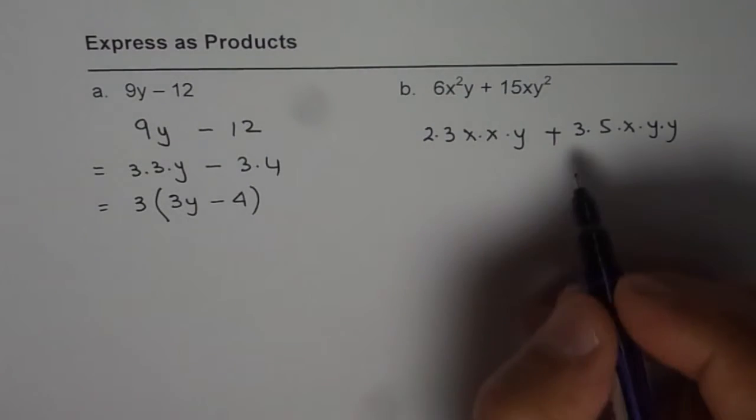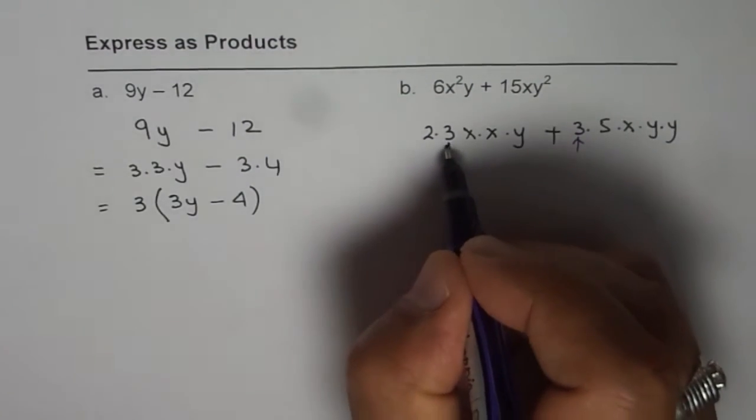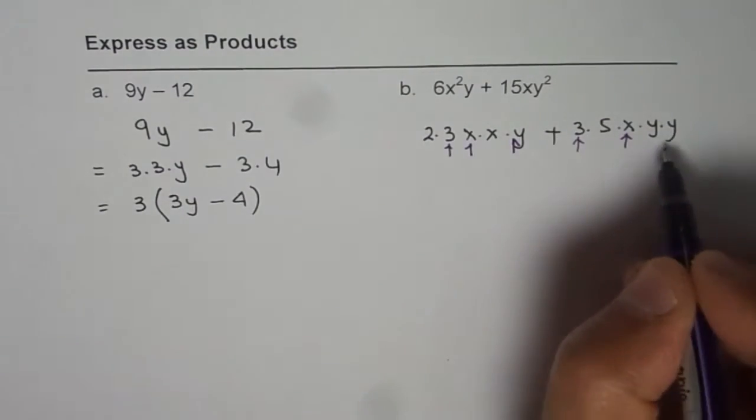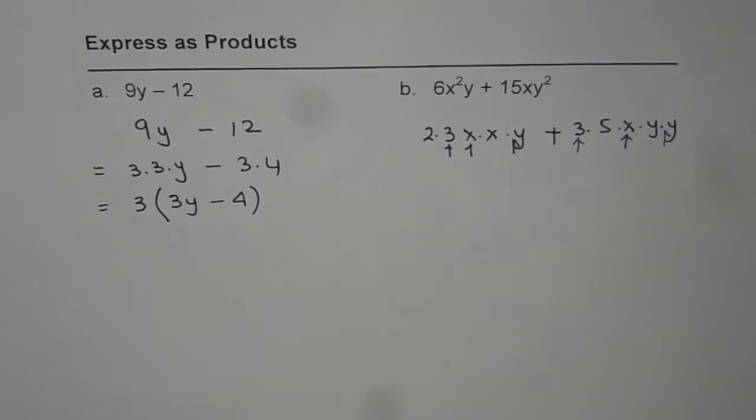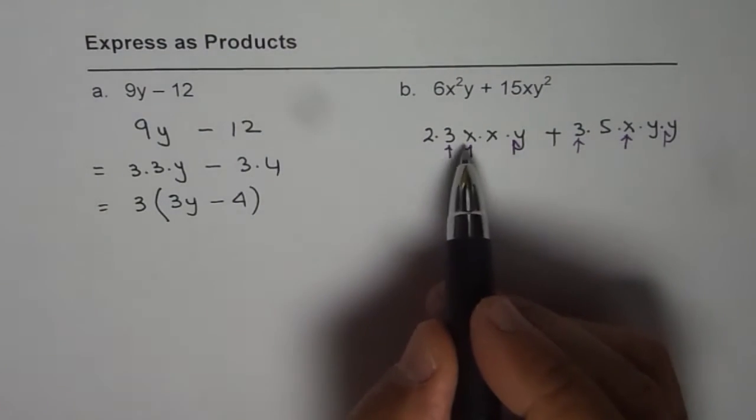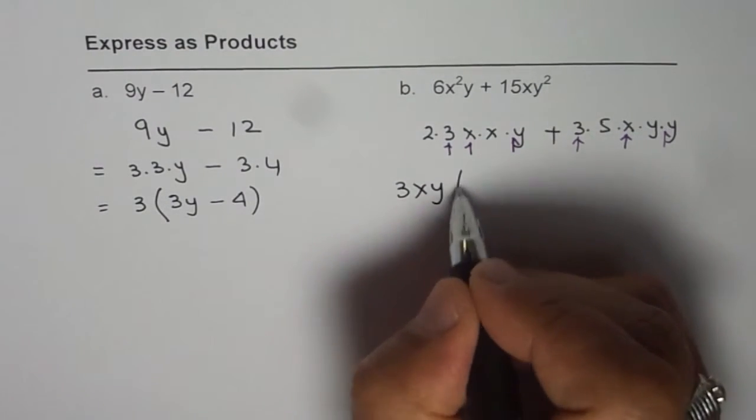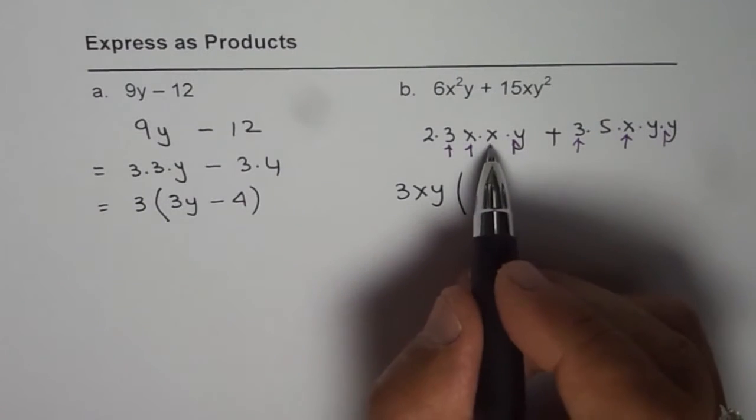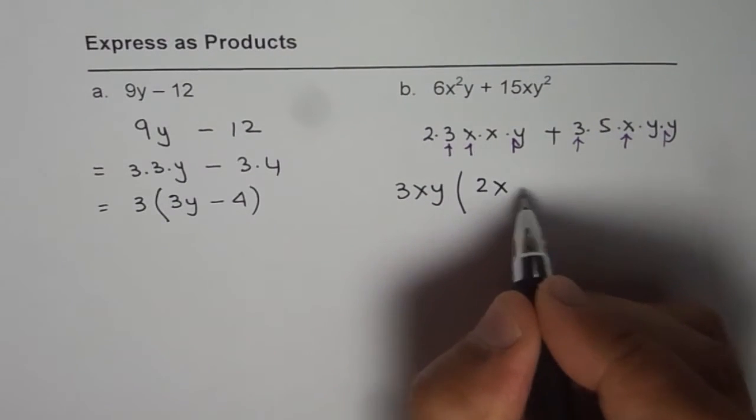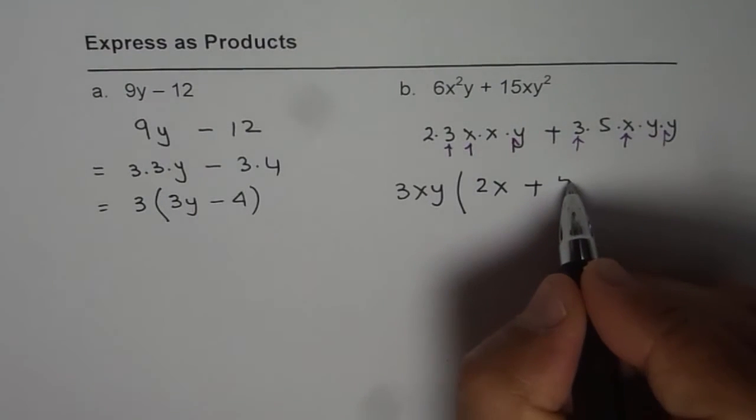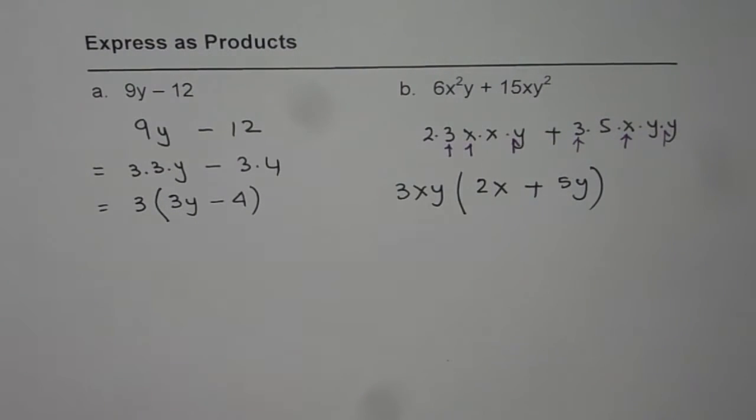Now if you notice, 3 is common. And as far as x's are concerned, one x is common, and even one y is common. So we can factor out 3xy. If we take away 3xy as a common factor, we are left with 2x from the first term plus 5y in the second term. That is how we can express a sum of terms as a product of terms.